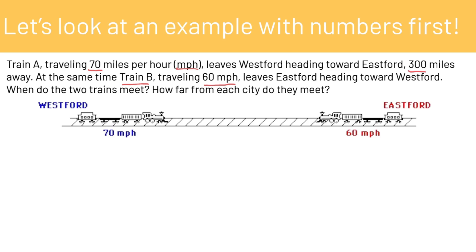Train A is traveling at 70 mph heading in the positive direction, moving from left to right. Train B is traveling at 60 mph going in the negative direction. We're using the equation for constant motion: x equals x-naught plus v times t. We have two equations and two variables — we want to know both where and when they meet.